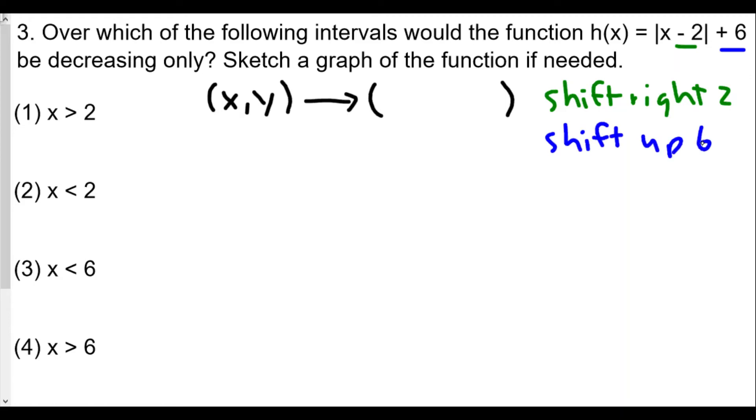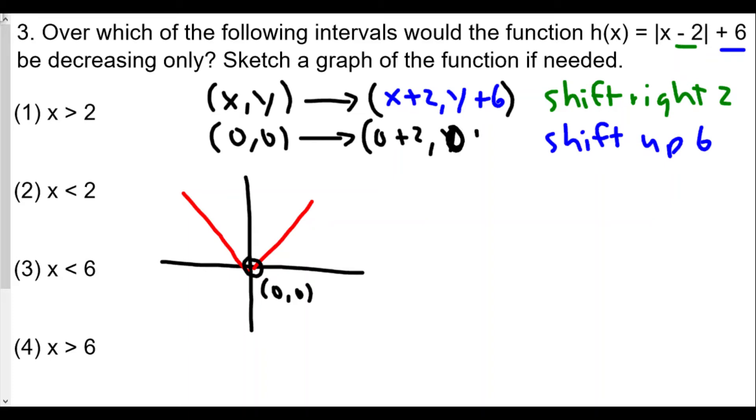So we have (x + 2, y + 6). For absolute value of x, it's a V shape, and our turning point for this function is going to be (0, 0). We apply this translation: x is 0 + 2 and y is 0 + 6. Our new turning point is (2, 6).